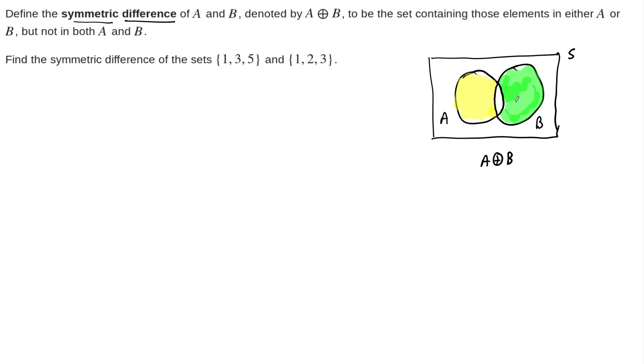Now we can use this Venn diagram approach because these sets are very small, these sets that we were given. The first set, the numbers 1, 3, and 5, we can call that A. 1, 2, 3, we can call that B. And we can just throw these into little circles.